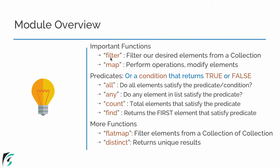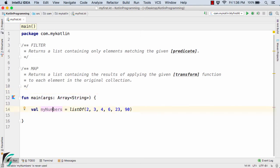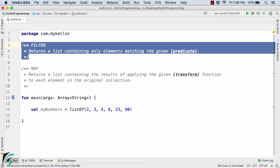In this video let us check out what filter and map are in Kotlin. The filter method filters out the desired results from a particular collection or list. If you want some elements based on a condition, you can use filter to get the desired elements. Similarly, the map function lets you perform some operation on elements and modify them, returning the elements in modified form.